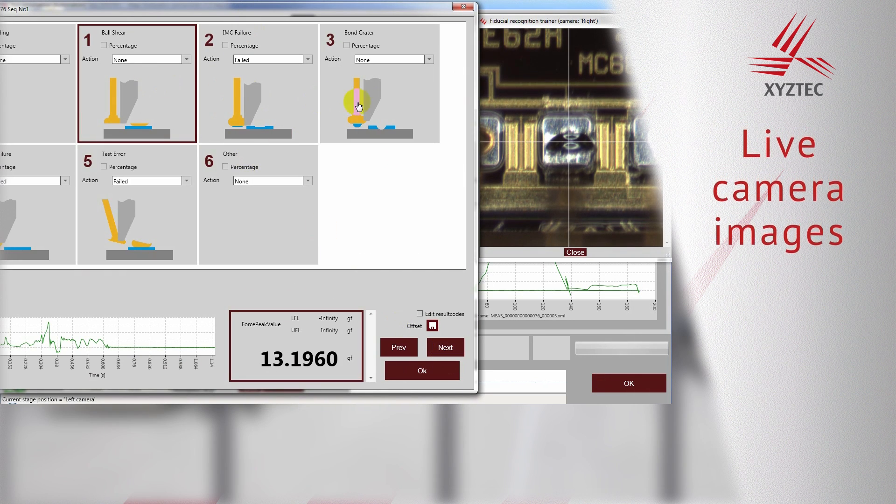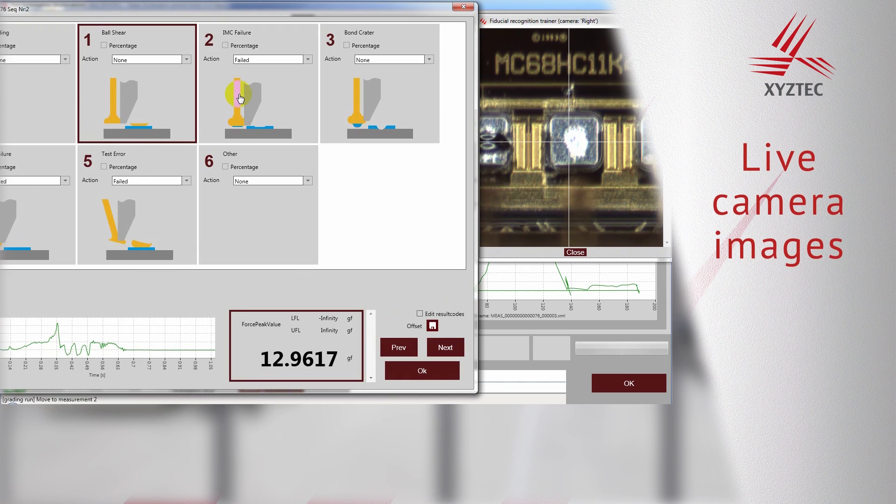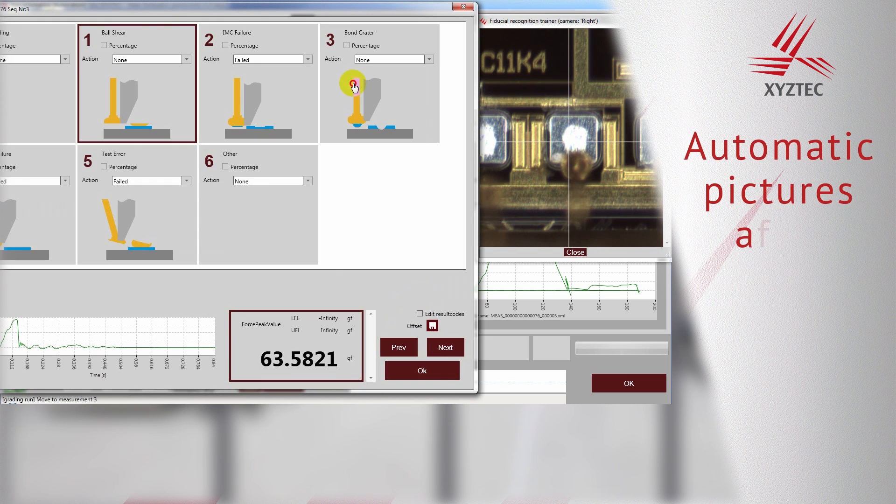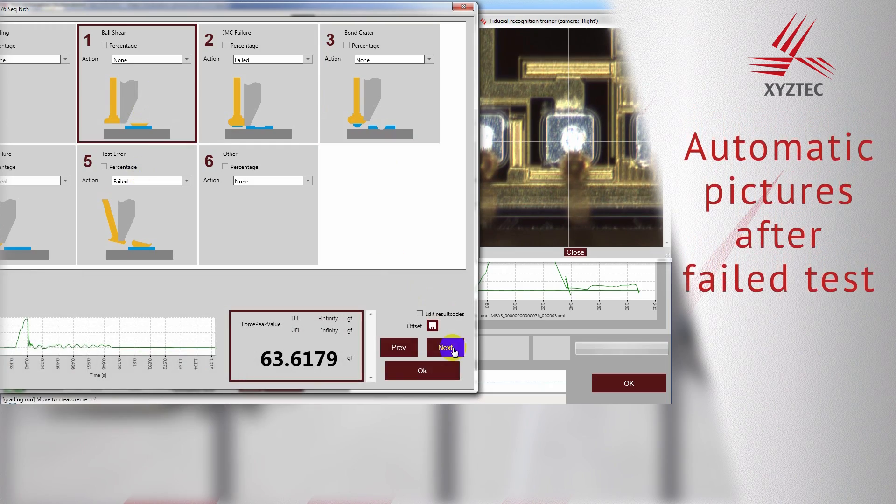A live camera image helps the operator determine the grading. The system can also automatically capture a picture of failed tests.